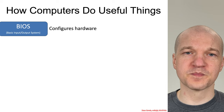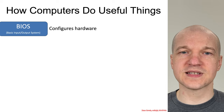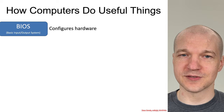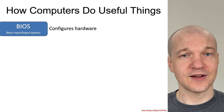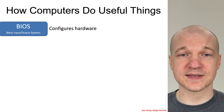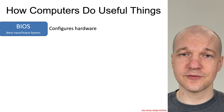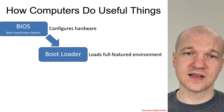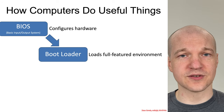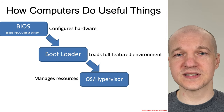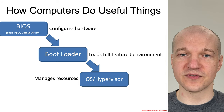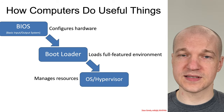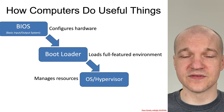To understand why the infection of firmware leads to real ultimate power, we have to understand how computers actually do useful things. It starts typically with the firmware, and the firmware configures the hardware, then hands off to something like a bootloader, which is going to load a more full-featured system like an operating system or a hypervisor. And that's going to then control the resources throughout the rest of the power-on cycle of the system.